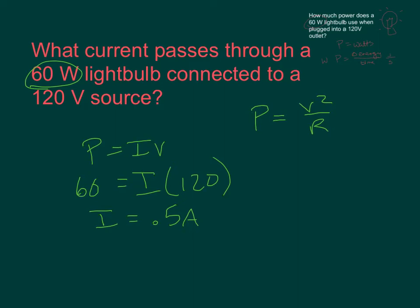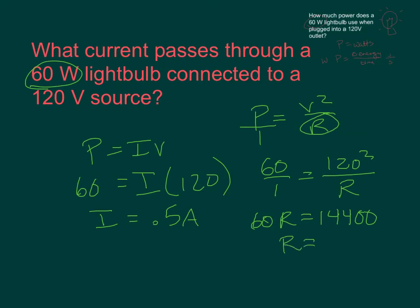If we're solving for the resistance, remember when our variable's on the bottom, it might be easier to put our power over 1. So we have 60 over 1 equals V squared, so 120 squared over R. We get 60R equals 14,400, so R equals 240 ohms. That's a way we could use one of the other power equations to solve our problems.